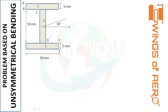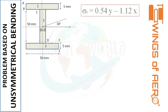Next we set the centroid as the origin. We know the centroid coordinates are x equals 25 and y equals 30, so we treat this point as (0, 0). Using the general equation σb equals 0.54y minus 1.12x, we now need to find the coordinates of x and y for specific points on the section. The important points we will evaluate are A, B, C, D, E, and F.